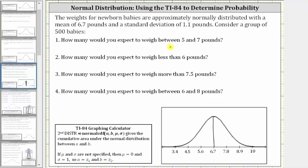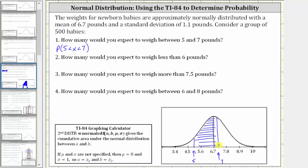We can indicate the probability that the weight is between 5 and 7 pounds as the probability that x is greater than 5 and less than 7. Looking at the graph, 5 pounds is approximately here and 7 pounds is approximately here. The probability is equal to the area under the curve between 5 and 7. Notice the weights of 5 and 7 pounds are not standard deviations above or below the mean, so we cannot apply the empirical rule.